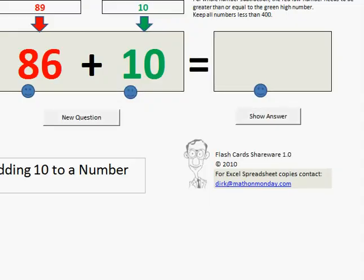Adding 10 to a number is pretty easy because each number, like the number 86, has a 10's digit and a unit's digit. Its 10's digit is 8, its unit's digit is 6. So to add 10 to 86, we just add 1 to the 10's digit of 86.